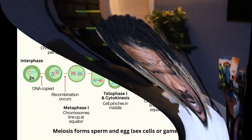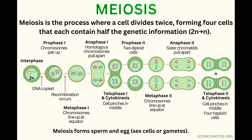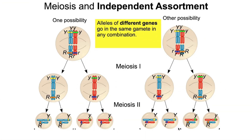During meiosis — we talked about meiosis before — there's a reshuffling of the deck that happens, and it creates a new combination of alleles randomly distributed into the gametes. Genes for different traits are inherited independently, meaning that the inheritance of one trait, like seed color for example, won't affect the inheritance of another trait like seed shape.